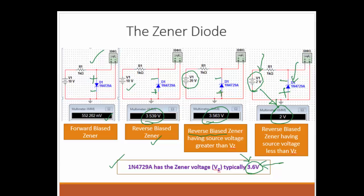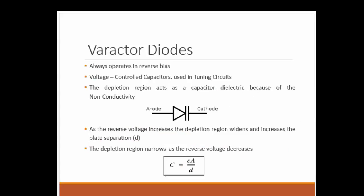The next type of diode is the varactor diode. The major application is in tuning circuits — for example, when tuning your radio AM or FM stations, it automatically changes frequencies. It always operates in reverse bias, similar to the Zener diode. Before getting into the varactor diode, we need to understand the concept of capacitors.